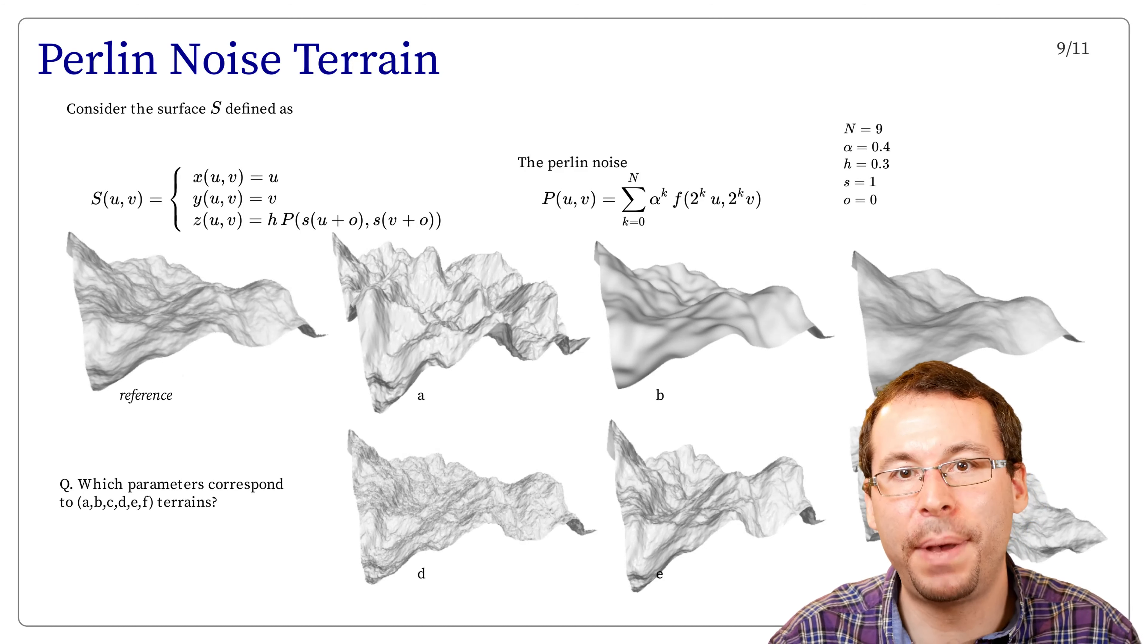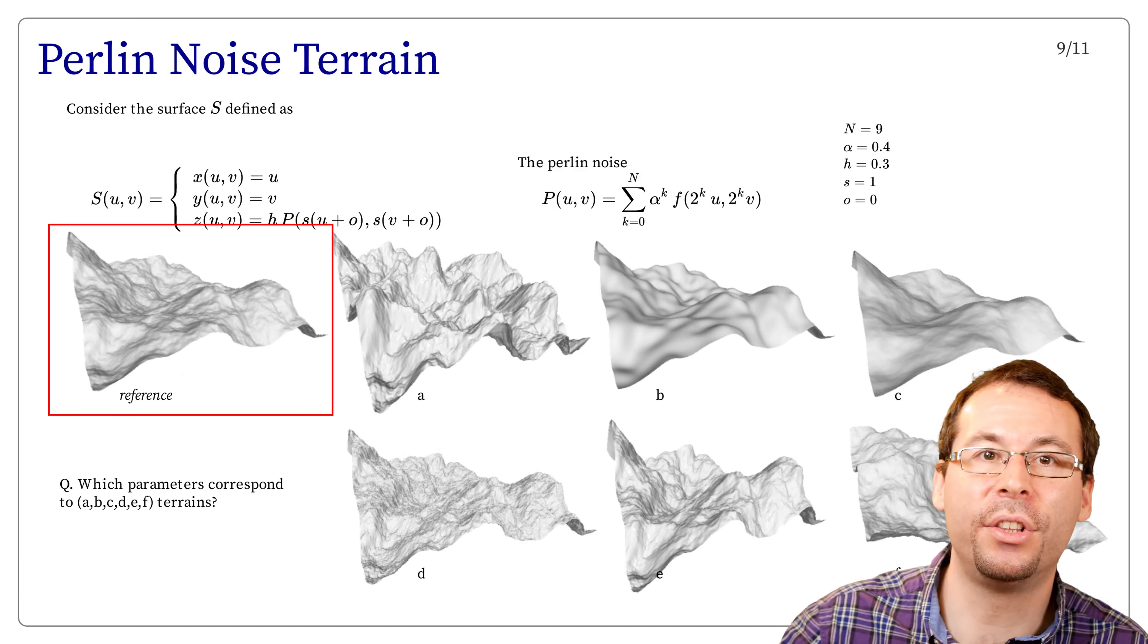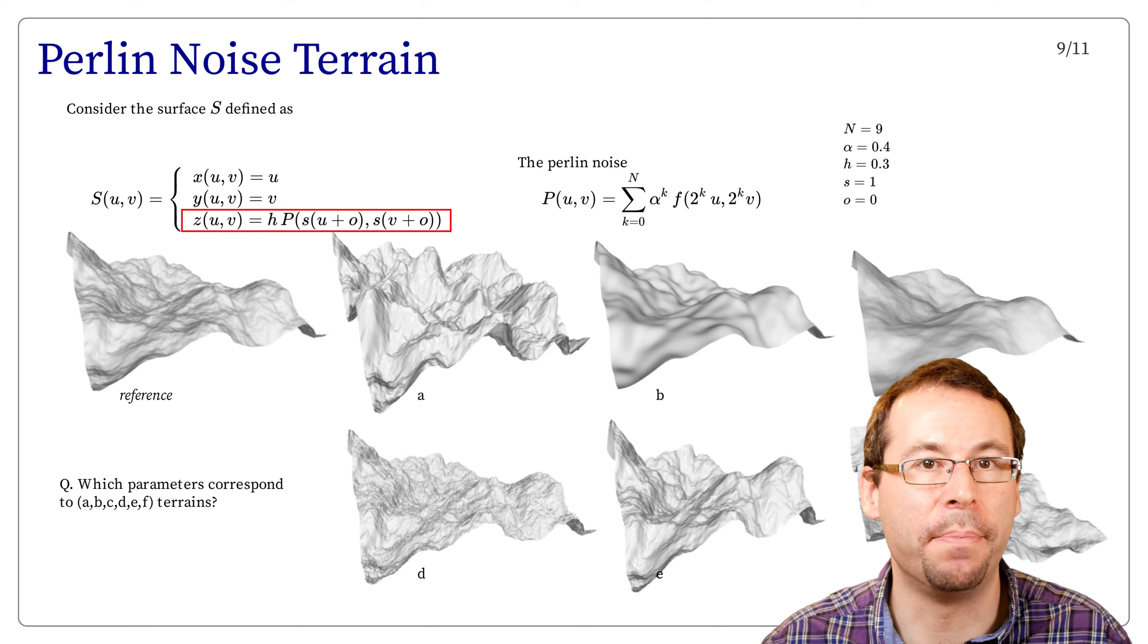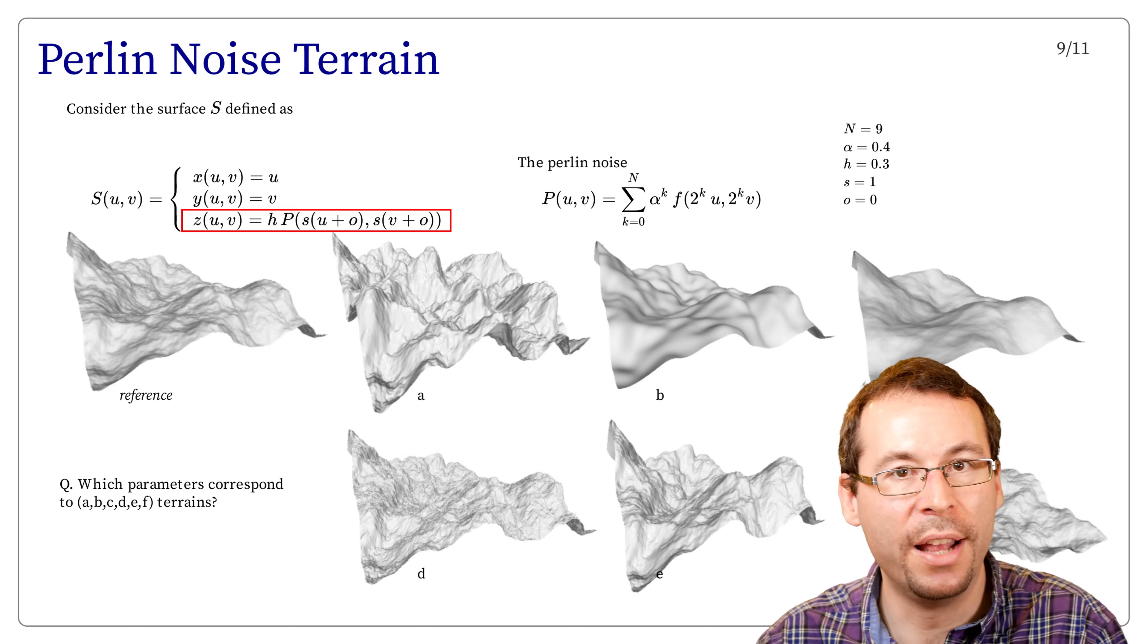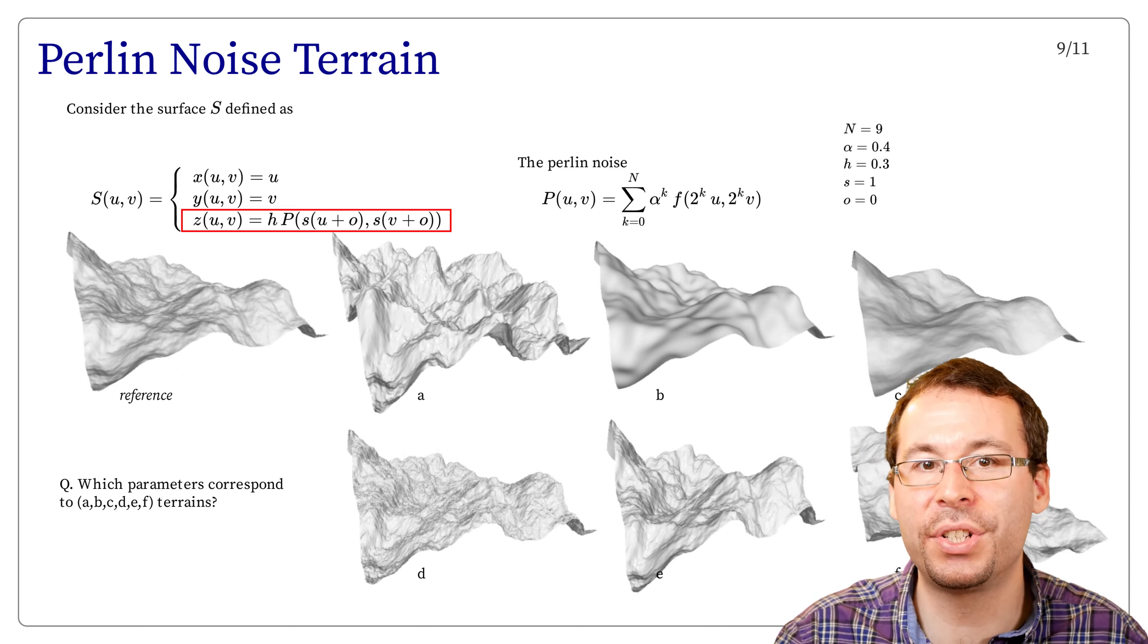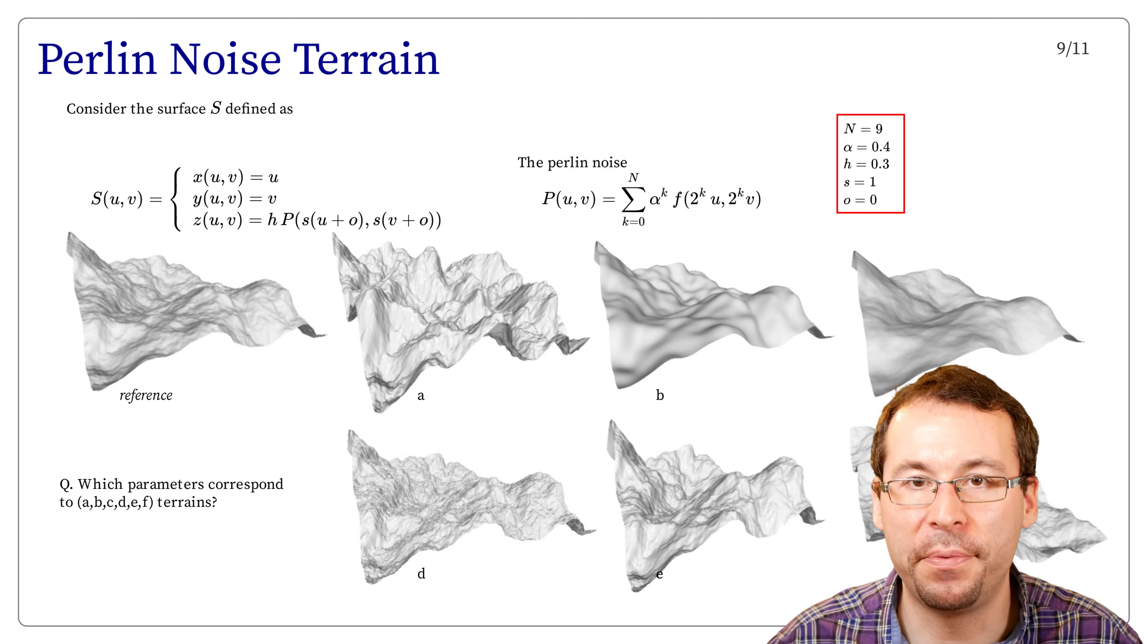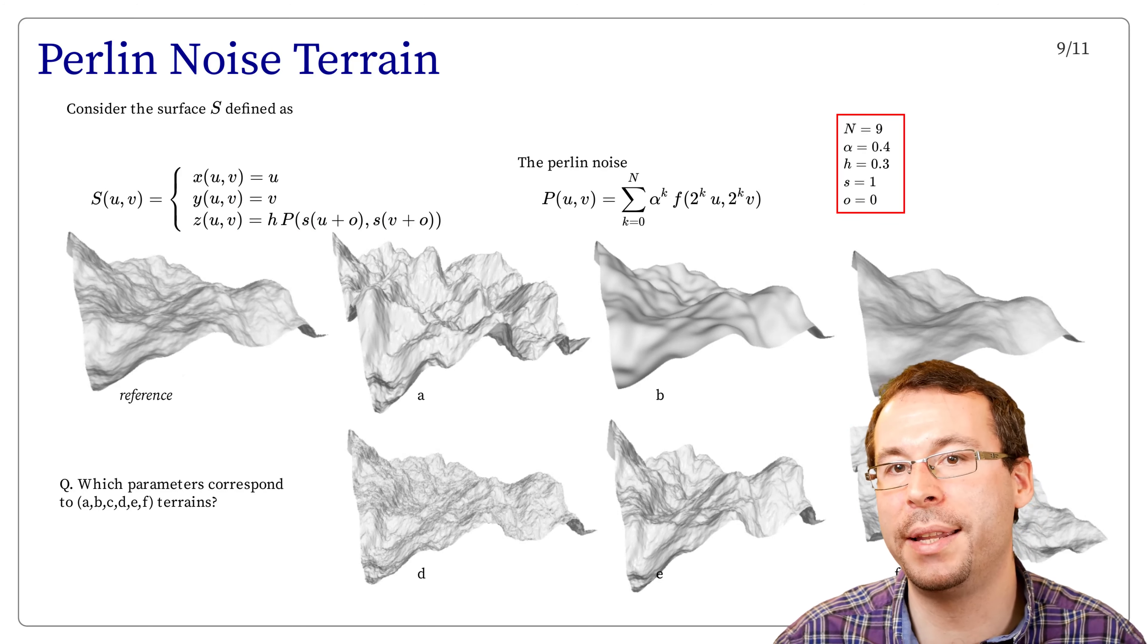And now is an exercise on the parameters of Perlin noise. I consider the reference terrain seen on the left. This terrain has been computed as a height field, and the height has the following equation: z equals to h, which is some parameter, times the Perlin noise p applied to two parameters, u and v, that are x and y. But these parameters are modified using the factors s and o. For the reference shape, I use 9 octaves, an attenuation parameter alpha of 0.4, the h parameter is 0.3, the s parameter is 1, and o is 0.